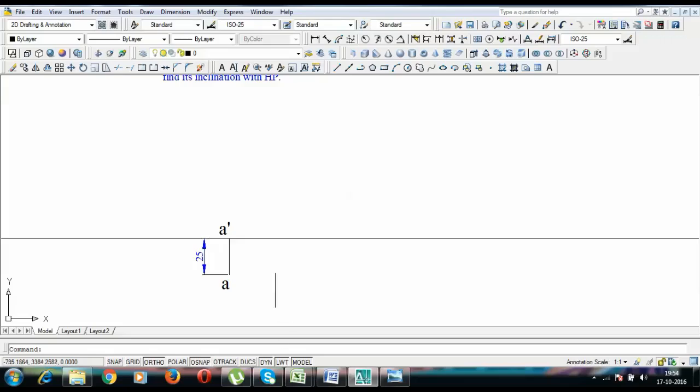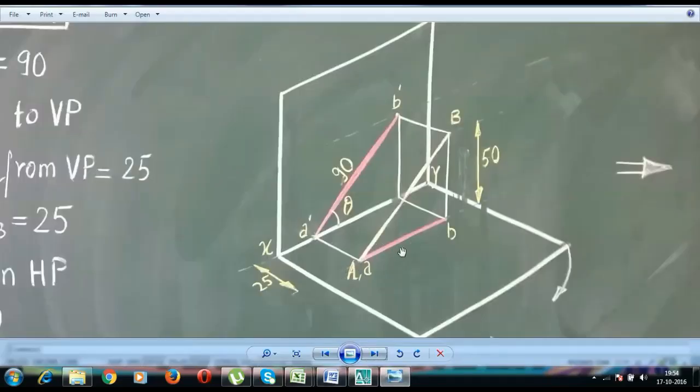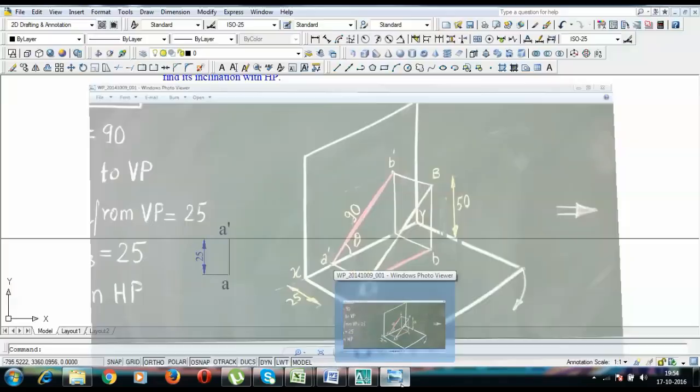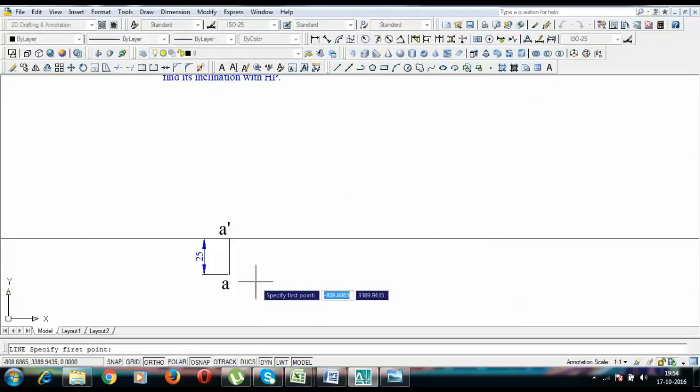Now as you can clearly see that this top view is a straight line. So what I'll be doing is I'll draw this straight line. I know that it's going to be a straight line, but how long? I have no idea about it.